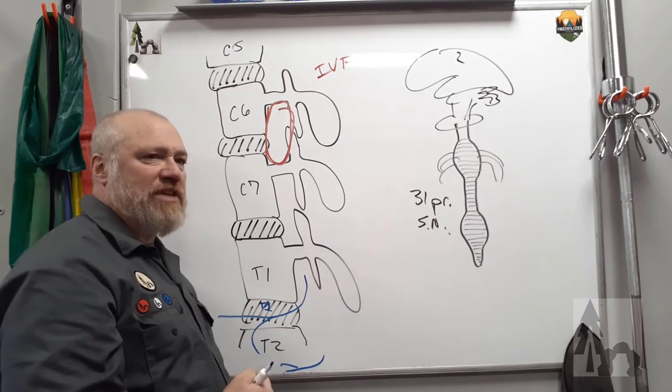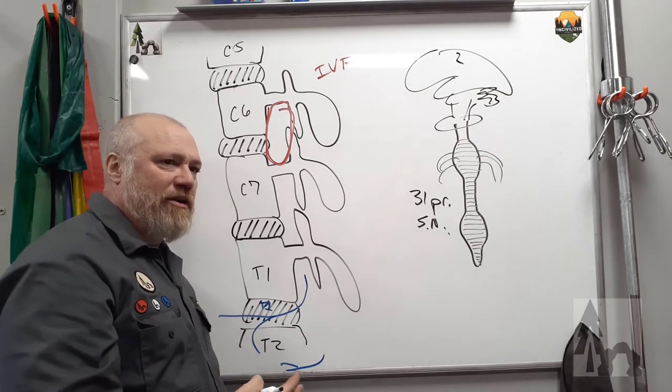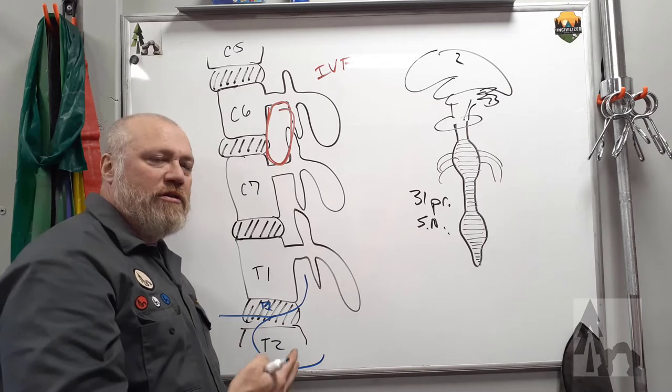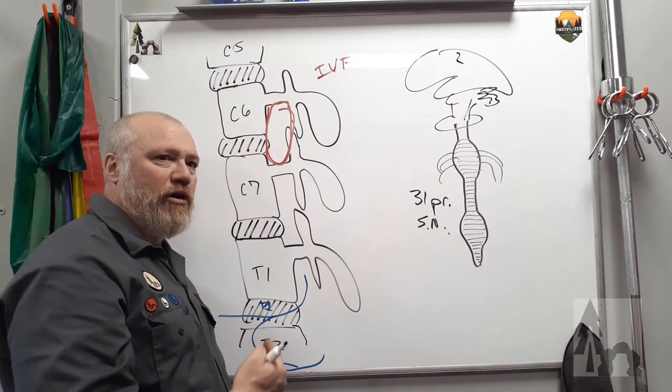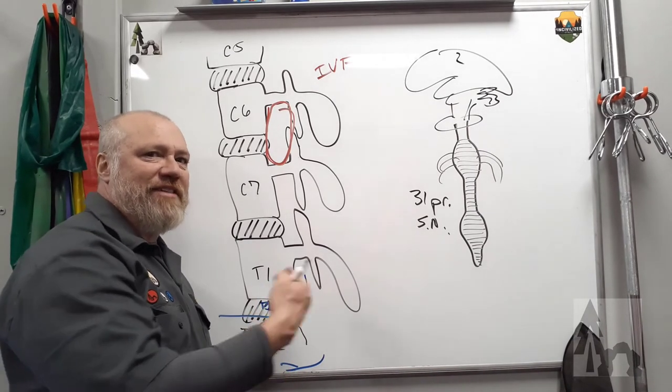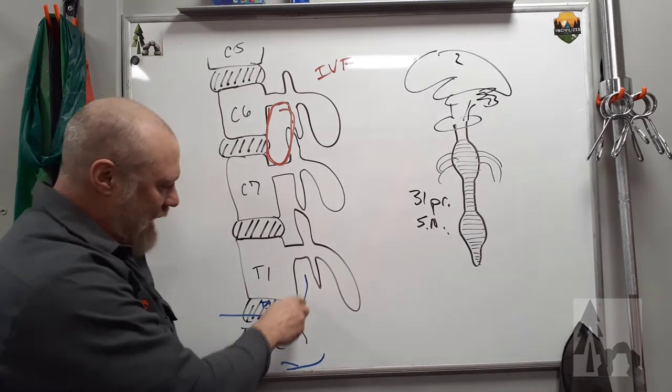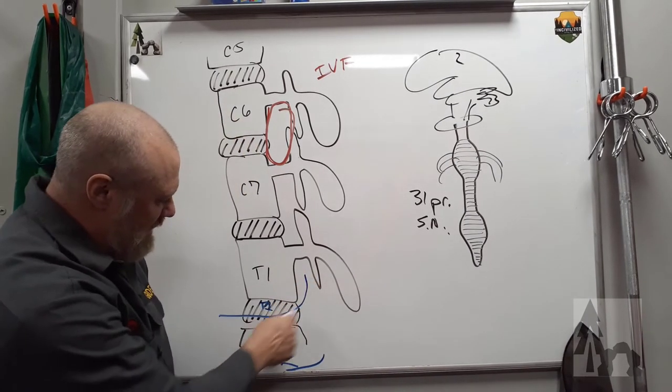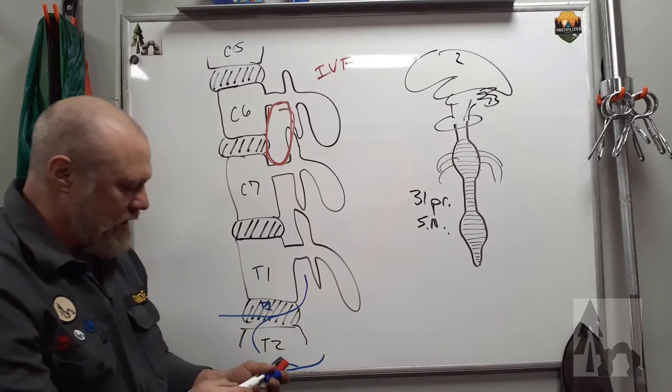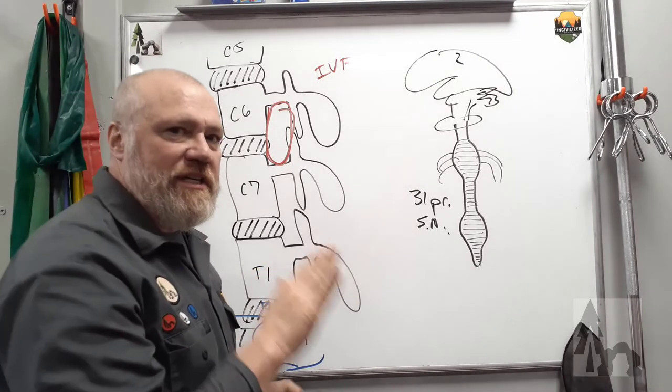So if I'm seeing clinical signs in an L5 distribution pattern, for L5 nerve root impingement or something, I would look or suspect L5 disc because it leaves the L5 IVF on the right and left and passes in this relationship next to the disc.